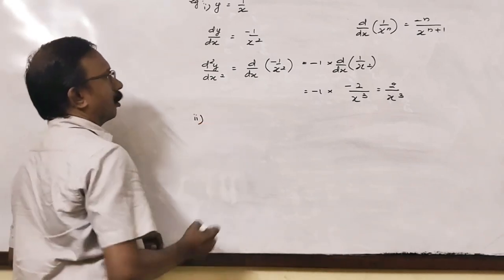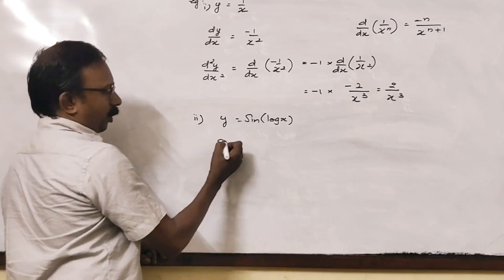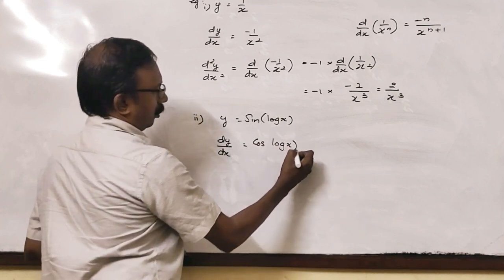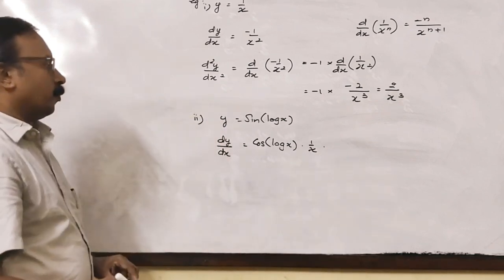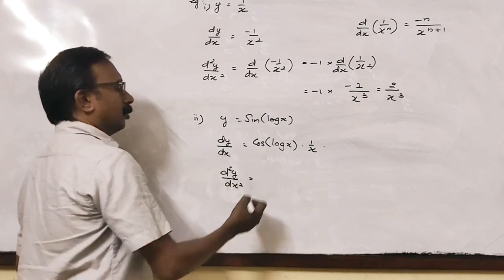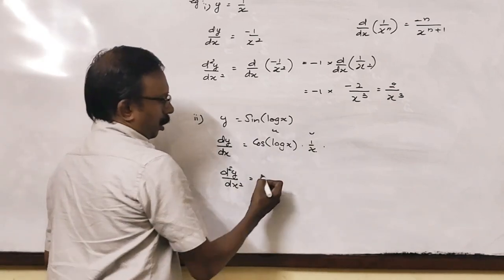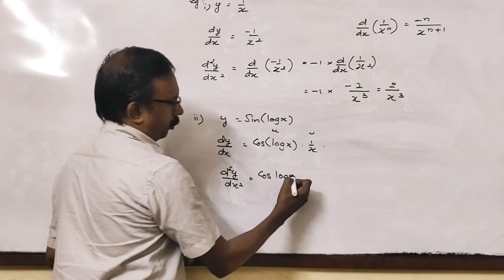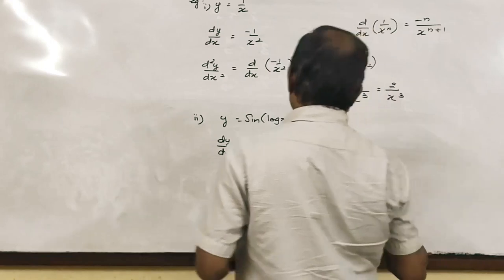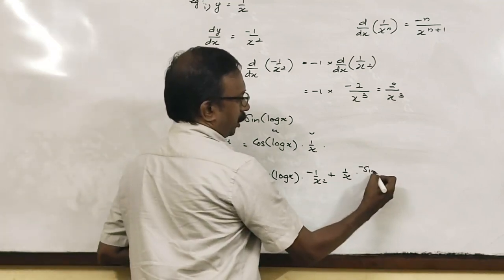Another example: y is equal to sin(log x). The first derivative dy/dx of sin(log x) gives cos(log x) into 1/x. Now for the second derivative d²y/dx², applying the product rule to cos(log x) times 1/x, we get the derivative of 1/x which is minus 1/x², and the second function into the derivative of the first function, that is minus sin(log x) into 1/x.